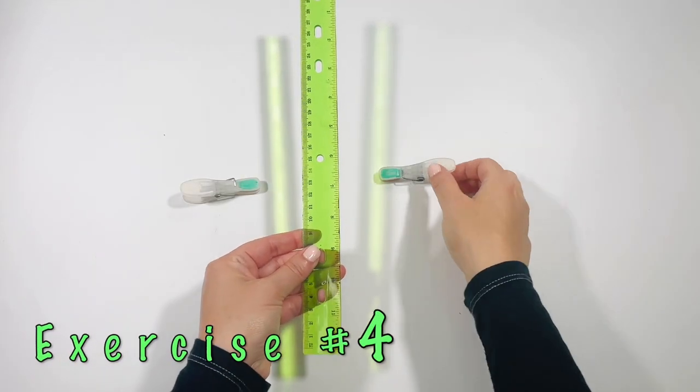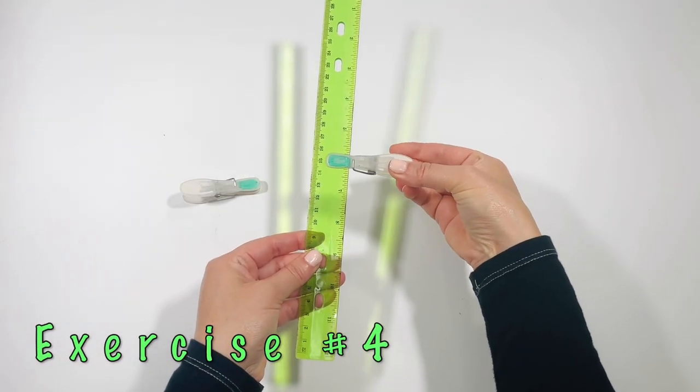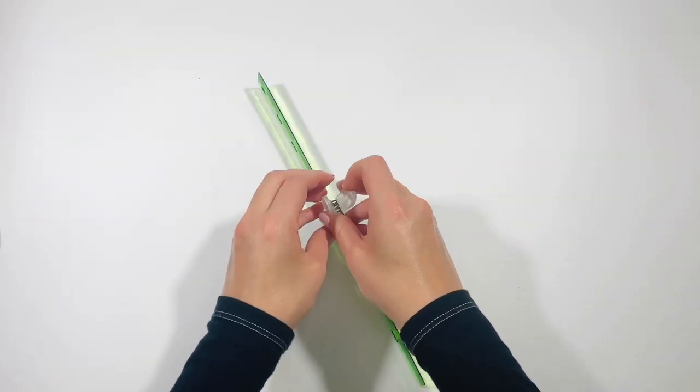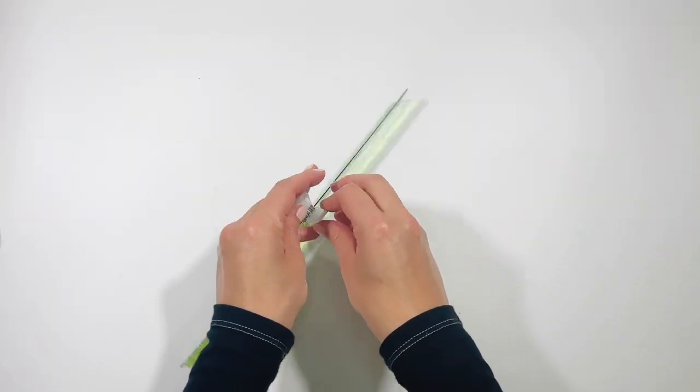Exercise number four. Place the cloth pin in the middle, turn the cloth pins on the table for 25 seconds.